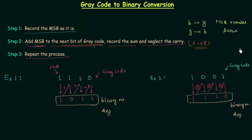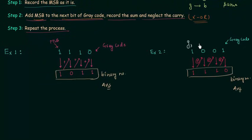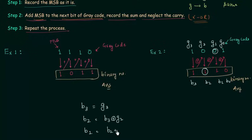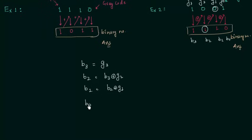Now I will generalize this conversion. Let the gray code bits be G3, G2, G1, G0 and the corresponding binary bits be B3, B2, B1, B0. Then: B3 equals G3, because the MSB is recorded as it is. B2 equals B3 XOR G2. B1 equals B2 XOR G1. This is how we can generalize gray code to binary conversion.